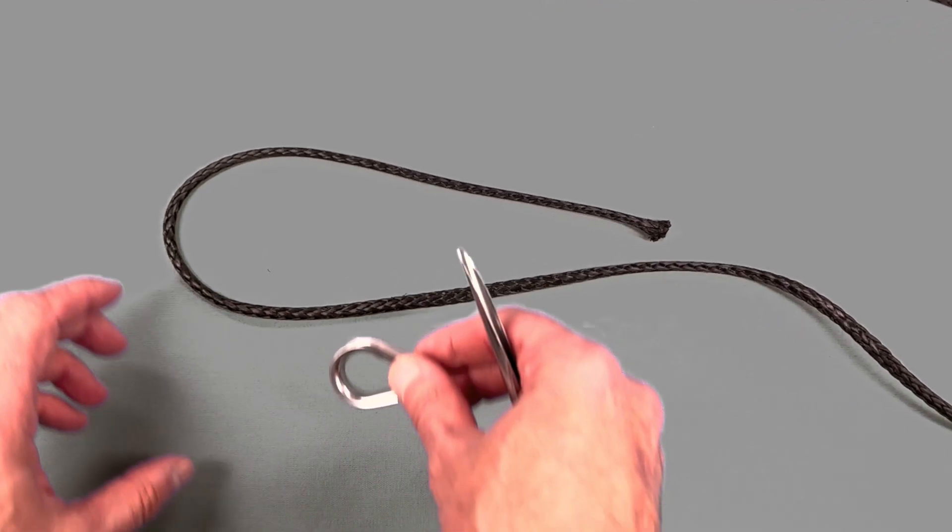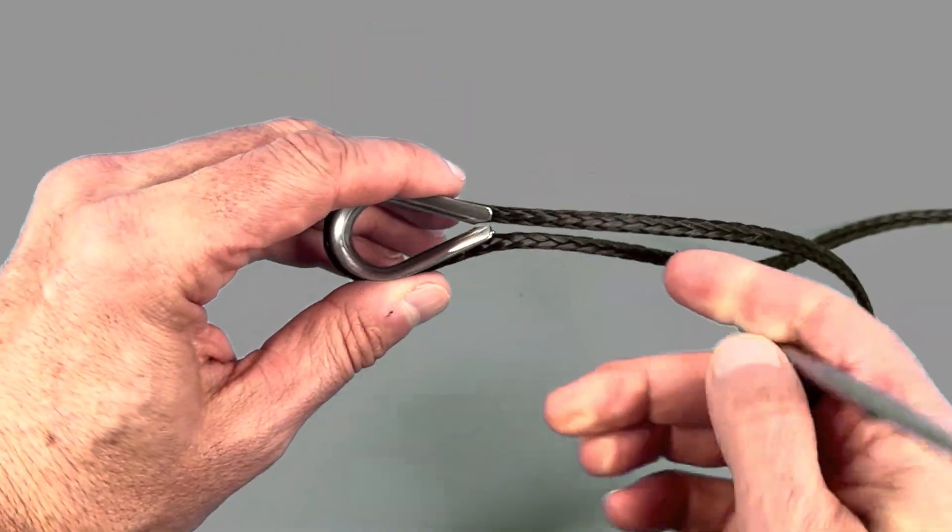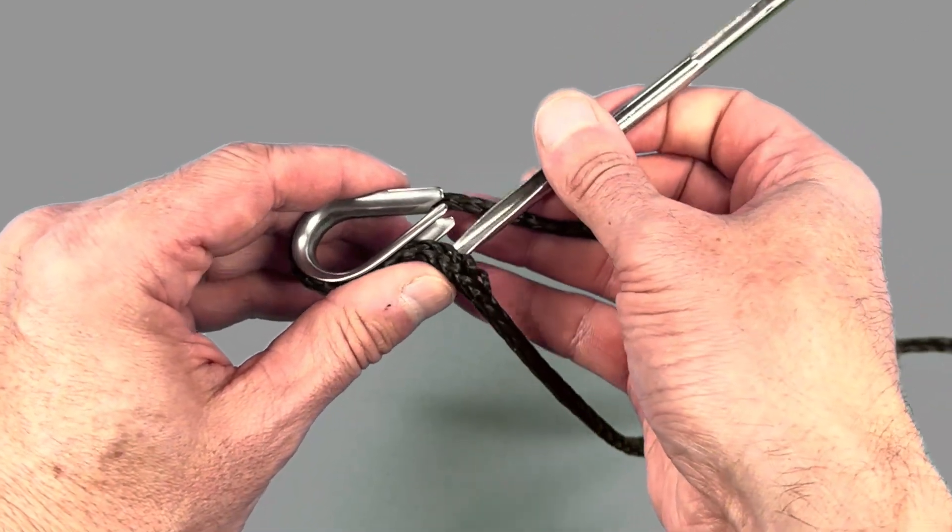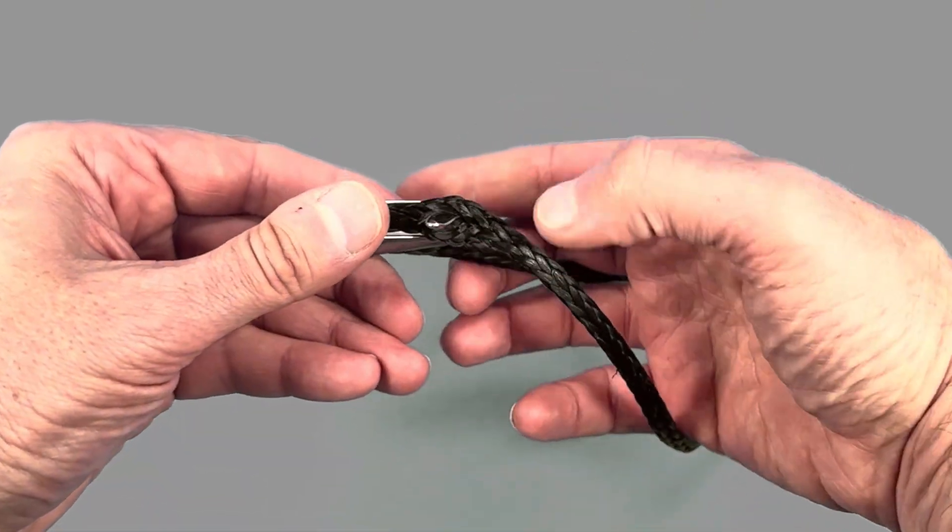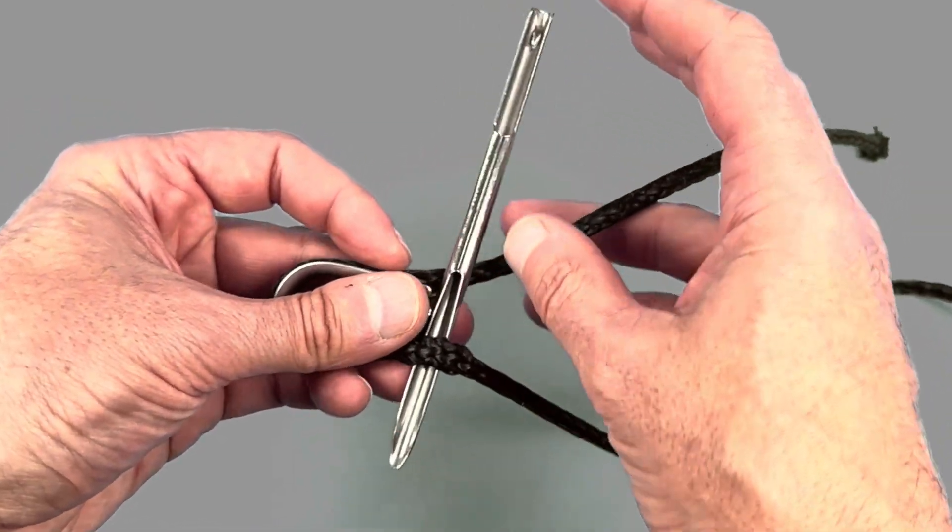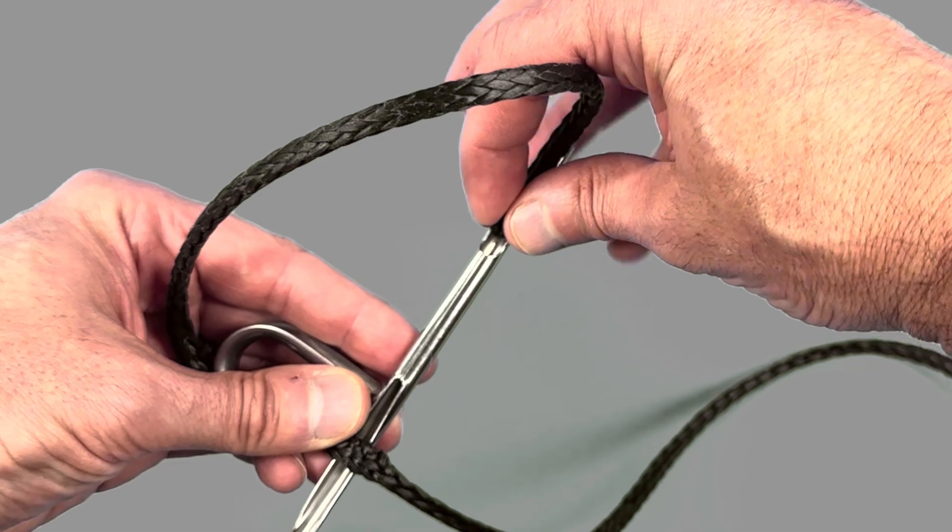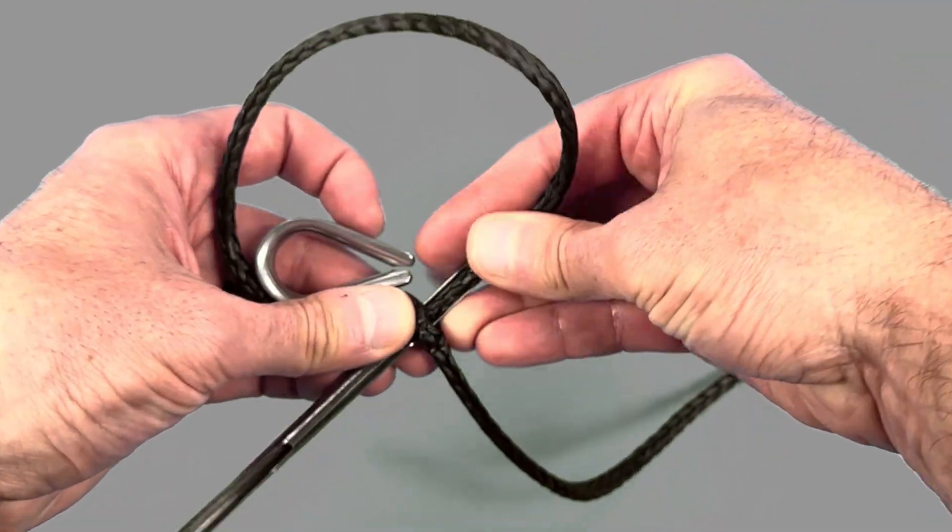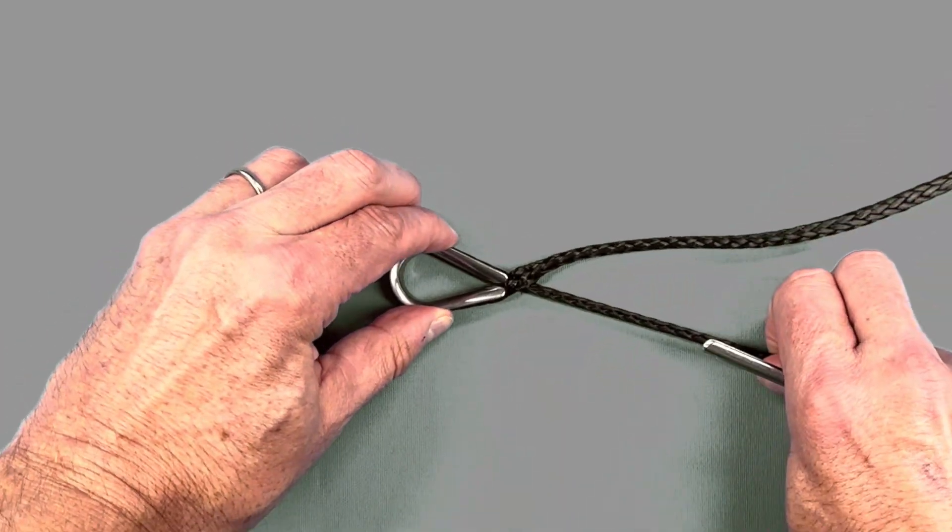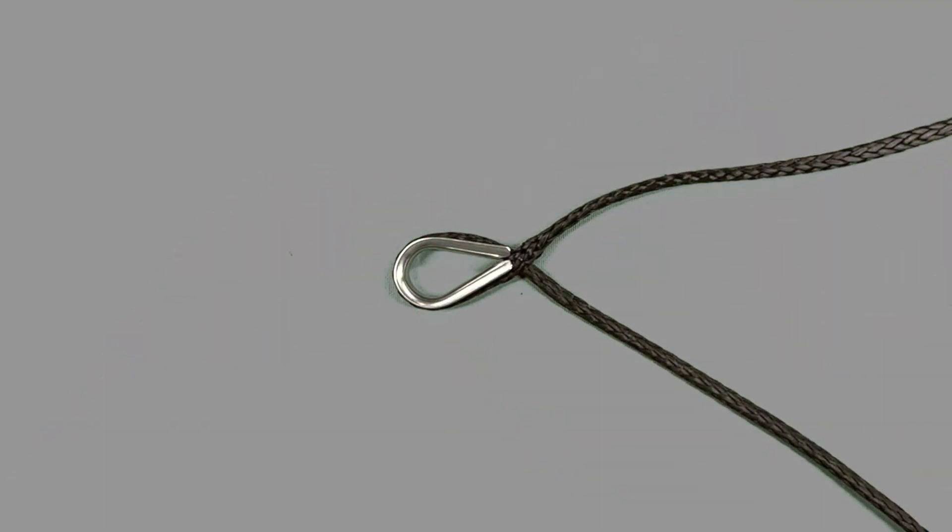You want to start your first splice by taking the working end and putting a bite in it about one and a half fid lengths in length. Take your thimble, place it in the bite, loosen up the Dyneema, and then pass your fid through where the end of the thimble is. You want to make sure you have equal threads on either side of your fid. Take the working end, put it into the fid, and pull it through to complete the first part of the Brummel locking splice.